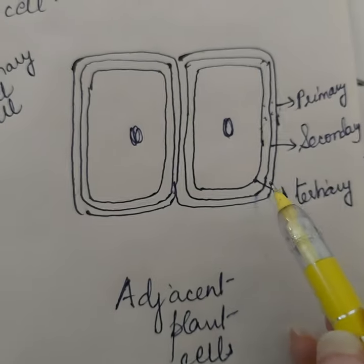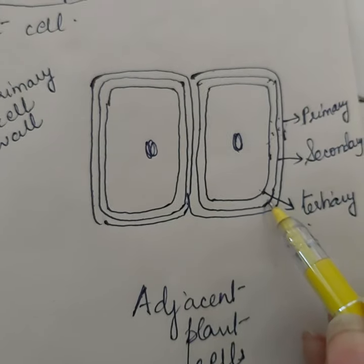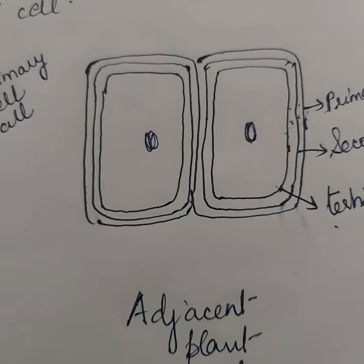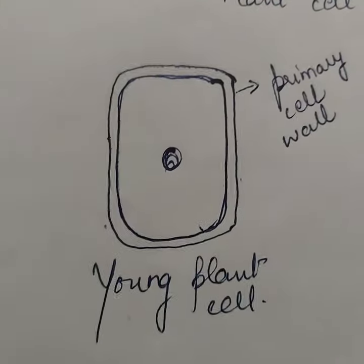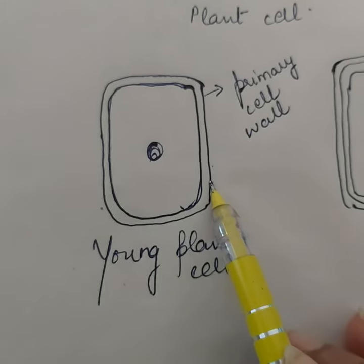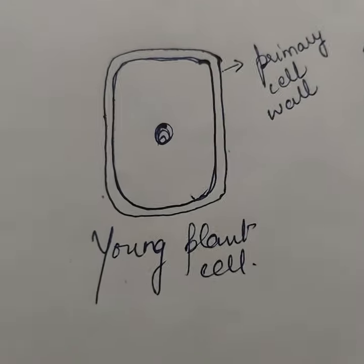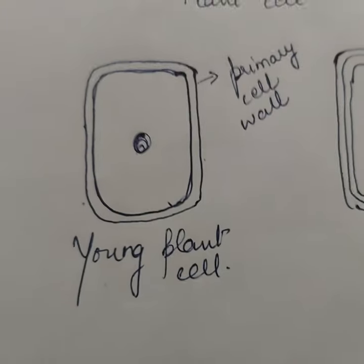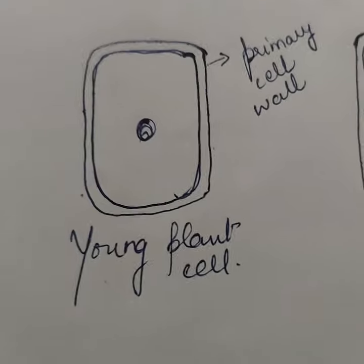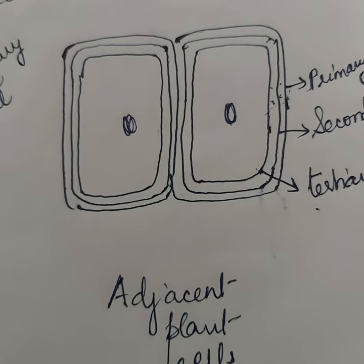When there is deposition of secondary and tertiary cell wall, the plant becomes extremely rigid and the plant cells become dead. This deposition is not of cellulose — it is of an even tougher polymer called lignin and suberin. The primary cell walls present in young plant cells are generally made up of cellulose, which is a long unbranched chain of thousands of glucose units joined to each other. Since cellulose, lignin, and suberin are all very tough polymers, they give immense structural strength and rigidity to plant cells.